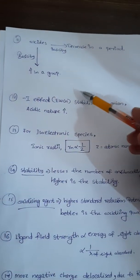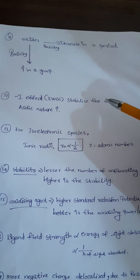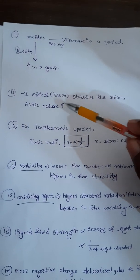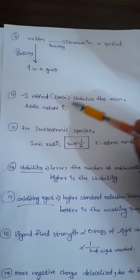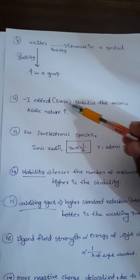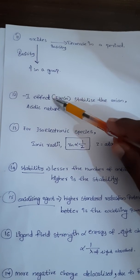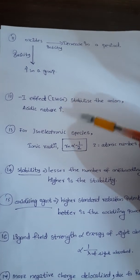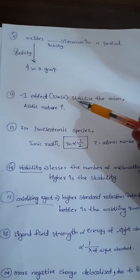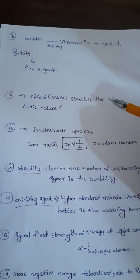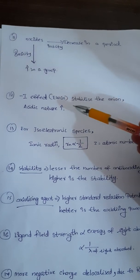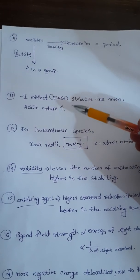Next point: minus I effect stabilizes the anion and thereby increases acidic nature. We already know that minus I effect will increase acidic nature — but how? Because it will stabilize the anion, and then automatically acidic nature will increase.